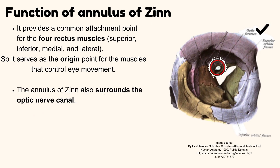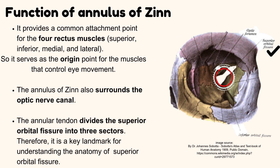The Annulus of Zinn also surrounds the optic nerve canal. The annular tendon divides the superior orbital fissure into three sectors. Therefore, it is a key landmark for understanding the anatomy of the superior orbital fissure.